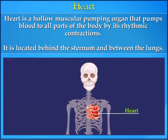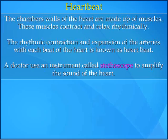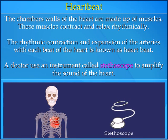4. Heart. The heart is a hollow muscular pumping organ that pumps blood to all parts of the body by its rhythmic contractions. It is located behind the sternum and between the lungs. 5. Heartbeat. The chamber walls of the heart are made up of muscles. These muscles contract and relax rhythmically. The rhythmic contraction and expansion of the arteries with each beat of the heart is known as a heartbeat. A doctor uses an instrument called a stethoscope to amplify the sound of the heart.